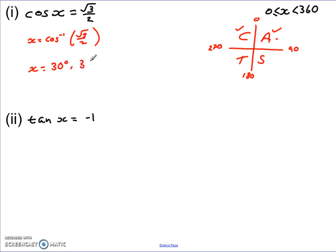And then to get the second one, we do 360, take away that 30. So our two solutions in this case are x equals 30 degrees and 330 degrees.